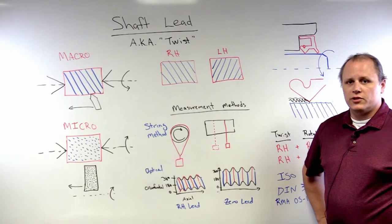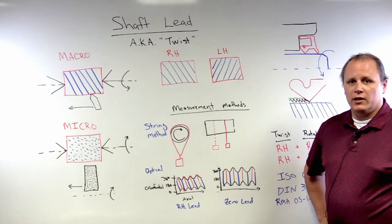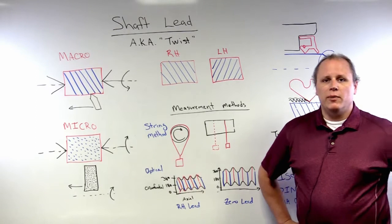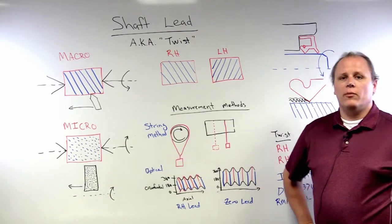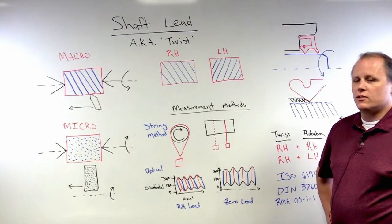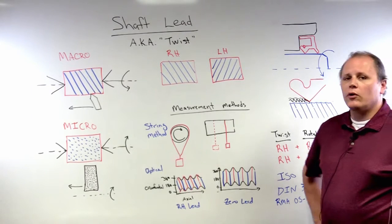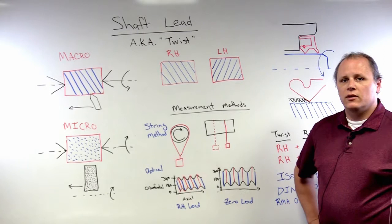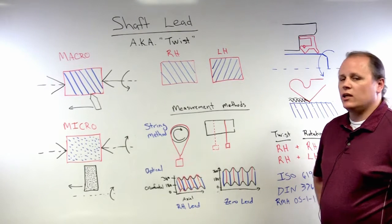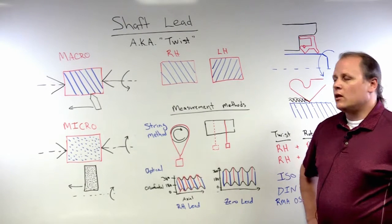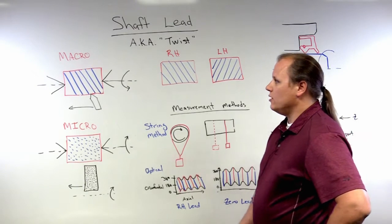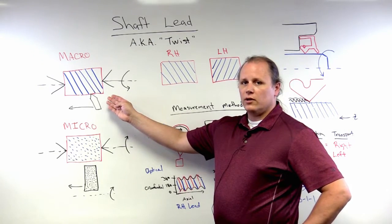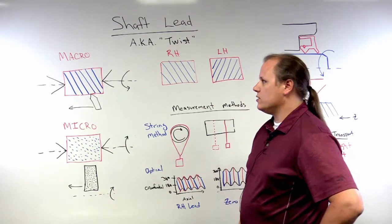Shaft lead, if not well understood and defined on your specifications, can have a detrimental impact to the performance of a dynamic sealing system. Typical rotary applications have an elastomeric sealing element interfacing with a rotating shaft. On the shaft surface, the characteristics are very important and critical to the proper operation of the sealing system.